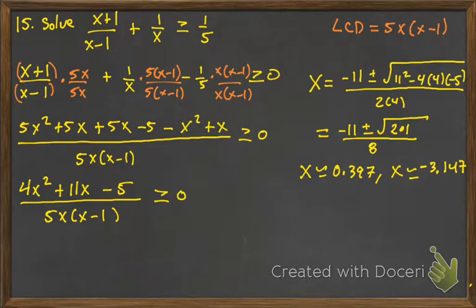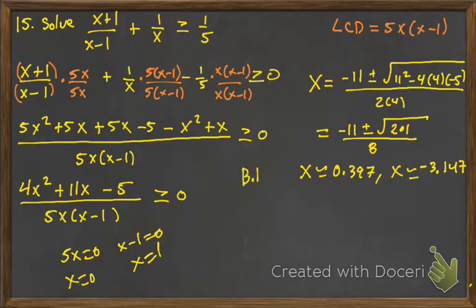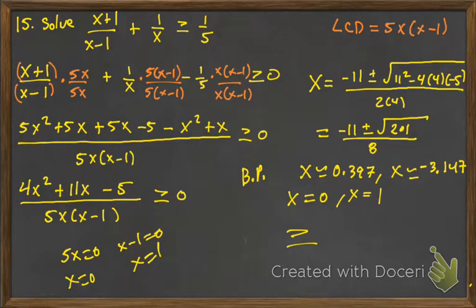The vertical asymptotes are where the denominator equals 0. That would be where 5x equals 0, so x equals 0, and where x minus 1 equals 0, so x equals 1. Those are our other two boundary points. x equals 0 and x equals 1 are also restrictions because they're in the denominator. Because we have a greater than or equal to in the inequality, we'll use brackets at the numbers except for 0 and 1, because we can't include them.